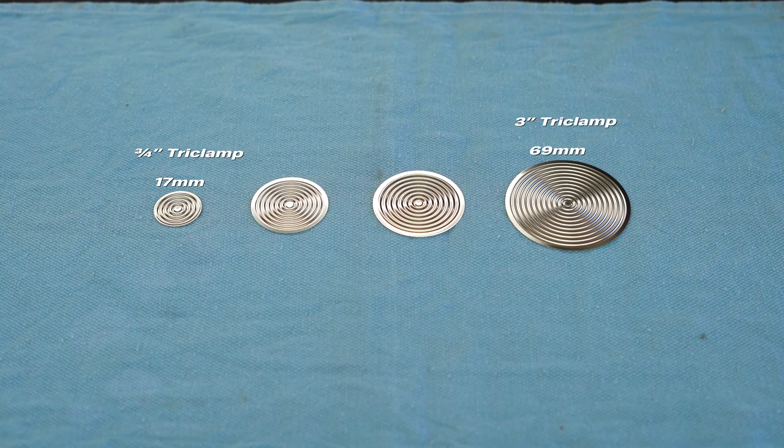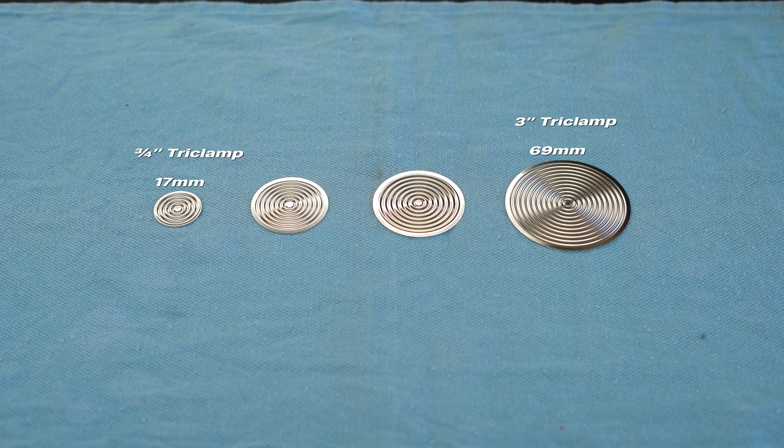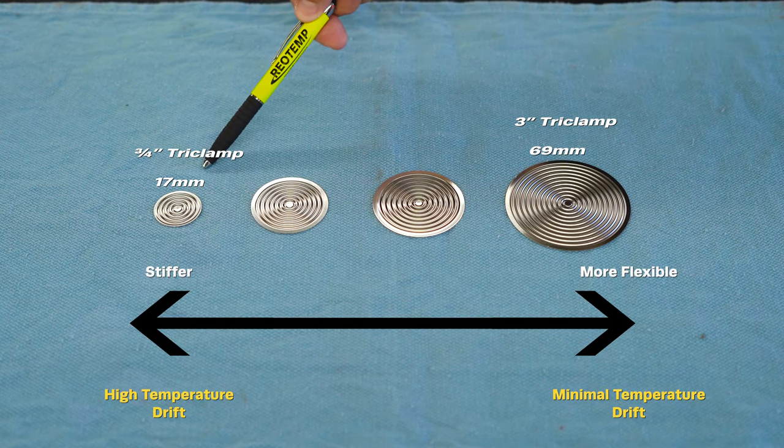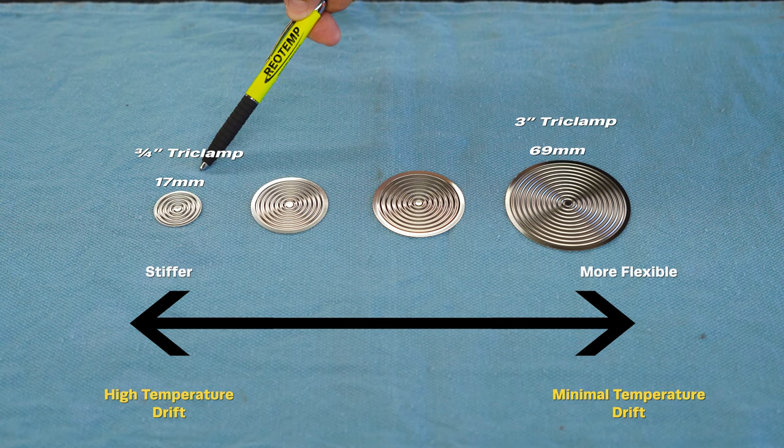If the diaphragm is flexible enough, it absorbs the small change in fluid volume. Stiffer diaphragms cannot absorb the volume change and result in an incorrect pressure reading. This is also known as temperature drift.